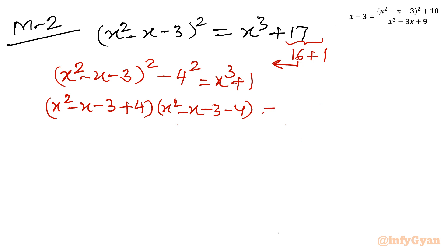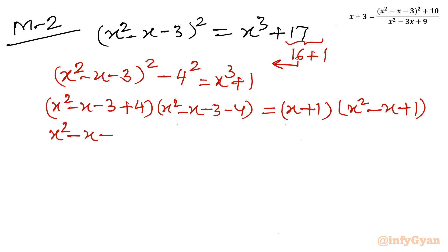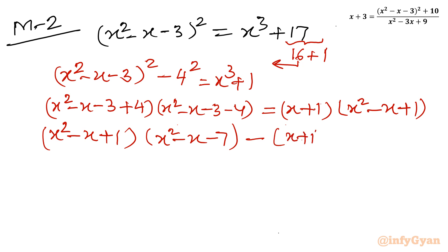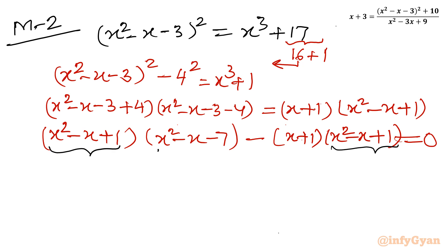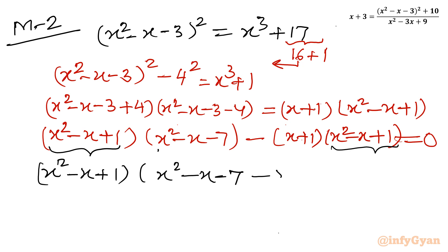Applying the difference of squares: (x² - x - 3 + 4)(x² - x - 3 - 4). On the RHS, x³ + 1 = (x + 1)(x² - x + 1) by the sum of cubes formula. Simplifying the brackets: (x² - x + 1)(x² - x - 7) = (x + 1)(x² - x + 1). Taking all terms to LHS: (x² - x + 1)(x² - x - 7) - (x + 1)(x² - x + 1) = 0. The quadratic (x² - x + 1) is common, so factoring it out gives: (x² - x + 1)(x² - 2x - 8) = 0.